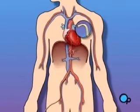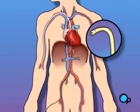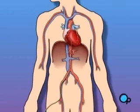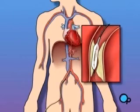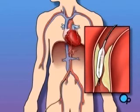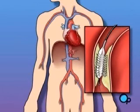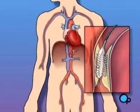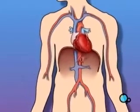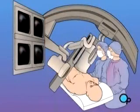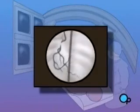a heart specialist will insert a thin tube into the artery in your arm or leg and gently guide it towards the problem area in your heart. Once the tube is in place, a small balloon is briefly inflated in order to widen the narrowed artery. A short length of mesh tubing called a stent is then inserted into the newly widened artery. During and after the procedure, your doctor will take x-rays in order to monitor your progress.